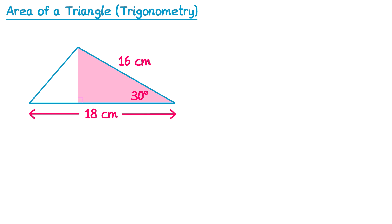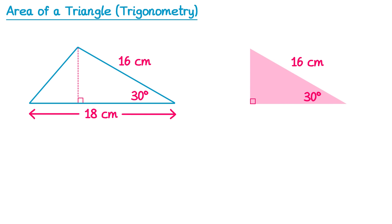We're going to take a closer look at this right-angle triangle. Since it's a right-angle triangle we can use trigonometry to find the missing information. We label the height we're trying to find as x and then label the triangle using SOHCAHTOA. The x is opposite the angle so it's O; the 16 is opposite the right angle so it's the hypotenuse H; and the other side is adjacent to the angle so it's A. Since we have the hypotenuse and want the opposite, we use sine: sine 30 equals x divided by 16.